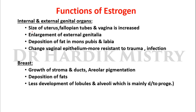The size of the uterus, fallopian tubes, and vagina is increased under the effect of estrogen. There is enlargement of external genitalia, deposition of fat in the mons pubis and labia, and changes in the vaginal epithelium, making it more resistant to trauma and infection. In the breast, there is growth of the stroma and ducts.